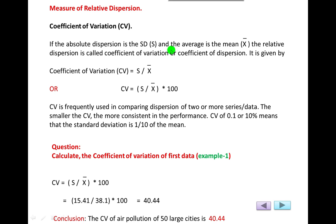So this is the explanation of the formula: if the absolute dispersion is the standard deviation and the average is the mean, the relative dispersion is called the coefficient of variation. The purpose of the coefficient of variation is that it is frequently used in comparing the dispersion of two or more series or data.